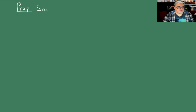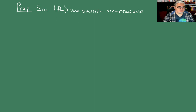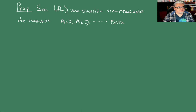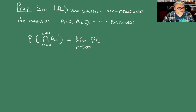Vamos a tomar otra vez una sucesión de eventos, pero ahora va a ser no creciente. La prueba de la intersección desde que N vale 0 hasta infinito de A_N es el límite cuando N tiende a infinito de la prueba de A_N.